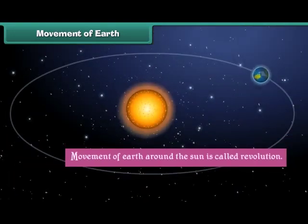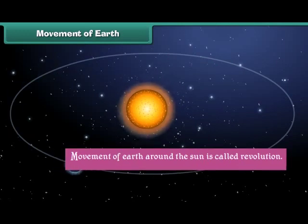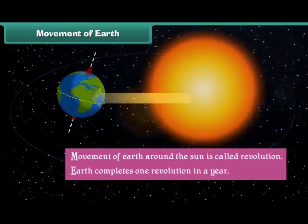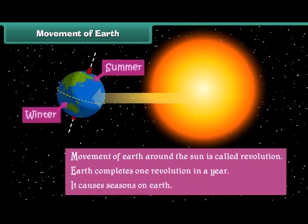Movement of Earth around the Sun is called revolution. Earth completes one revolution in a year, and it causes seasons on Earth.